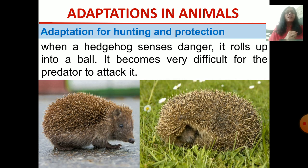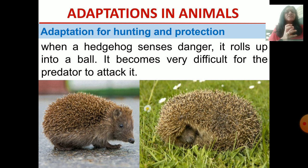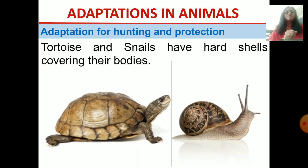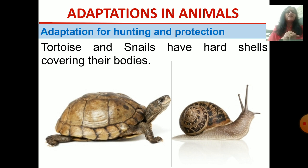Another example is the hedgehog. Whenever it senses danger, it rolls up into a ball — you can see on the right side. It becomes difficult for the predator to attack it because it becomes just like a ball, and it also has spines. Tortoise and snails also protect themselves — they have hard shells over their bodies, a hard covering. Their soft bodies are protected under these hard shells.